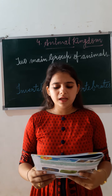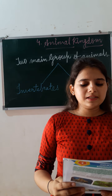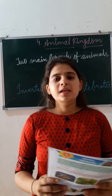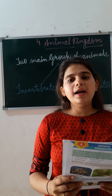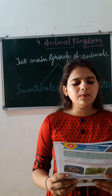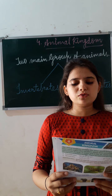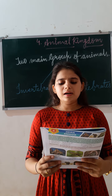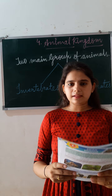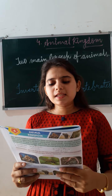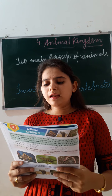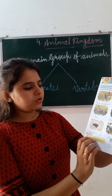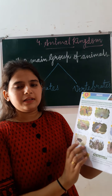Birds ke paas pankh aur chonch hoti hai. All birds lay eggs — sabhi jo pakshi hain woh ande dete hain. Most birds can fly, so some birds have lost the ability to fly — kuch jo pakshi hote hain woh udne mein asamarth hote hain, woh ud nahin sakte. Now look at the pictures given below and name these birds. Take care and help from the box given below — usko dekhke pictures ko dekhna hai aur fill karna hai.